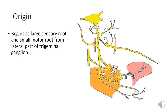Moving on to the origin: the mandibular nerve is a branch of the trigeminal nerve, the fifth cranial nerve. It arises as a large sensory root and a small motor root from the lateral part of the trigeminal ganglion.